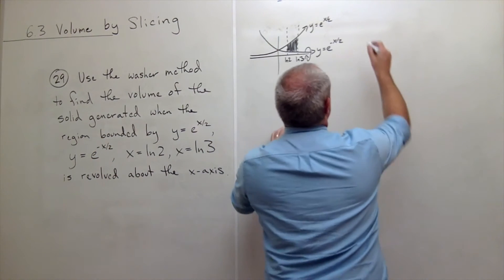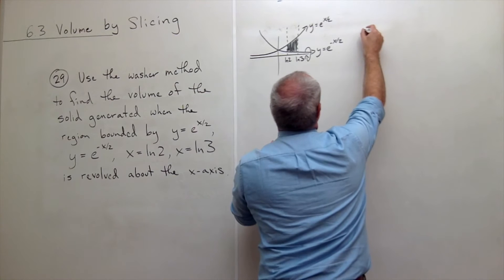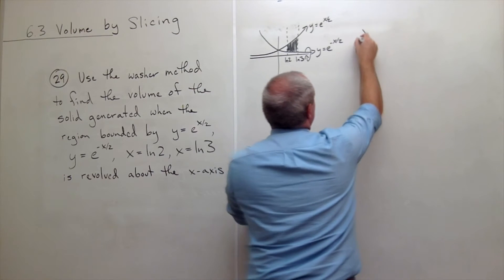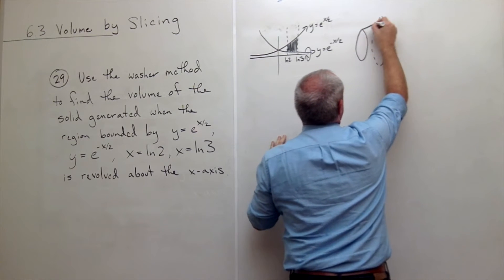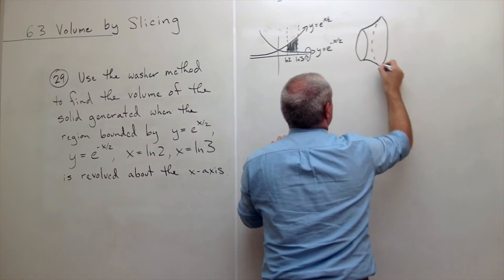When I do, I get a shape that would look sort of like this. A little bigger back here. Then this goes up. This will go down.